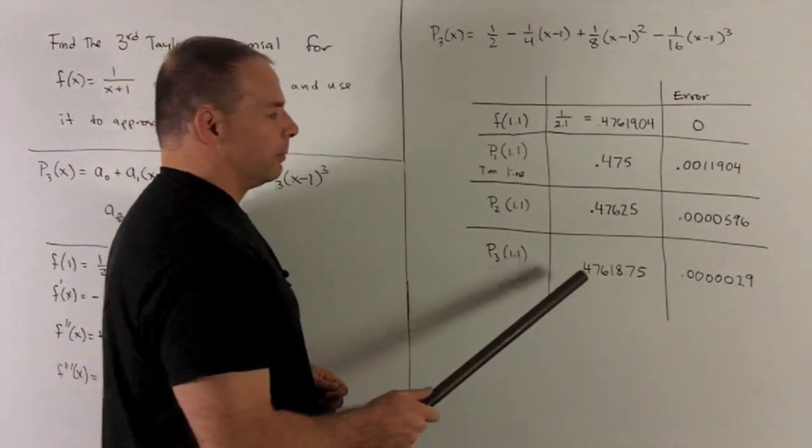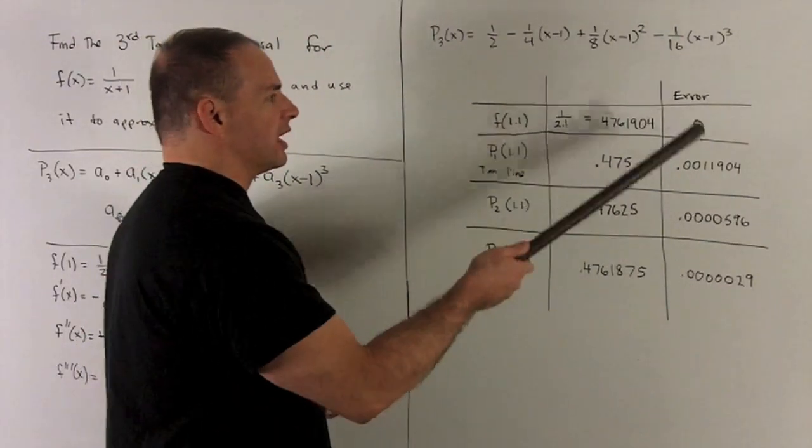And then when we go all the way out to our third Taylor polynomial at one point one, we get point four seven six one eight seven five. And note we're accurate out to six places. We're not getting an error until the sixth decimal place. So you can see as I keep adding terms on here, we're getting closer and closer to our actual answer.